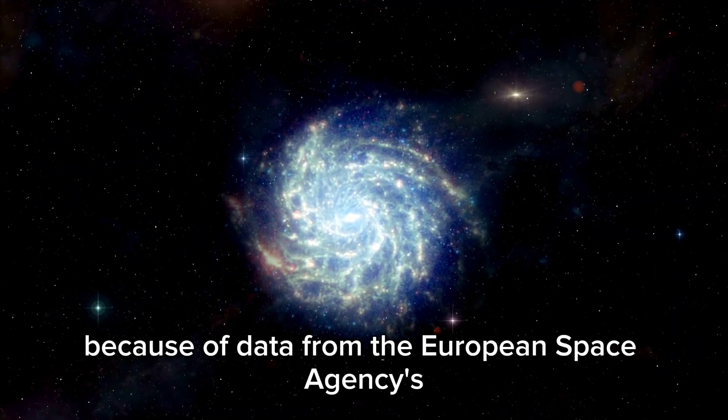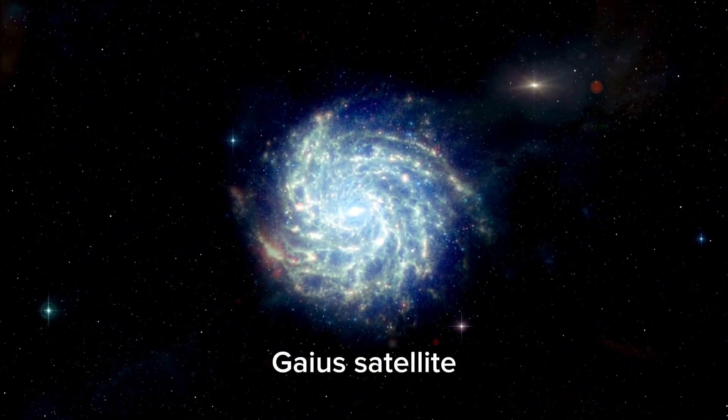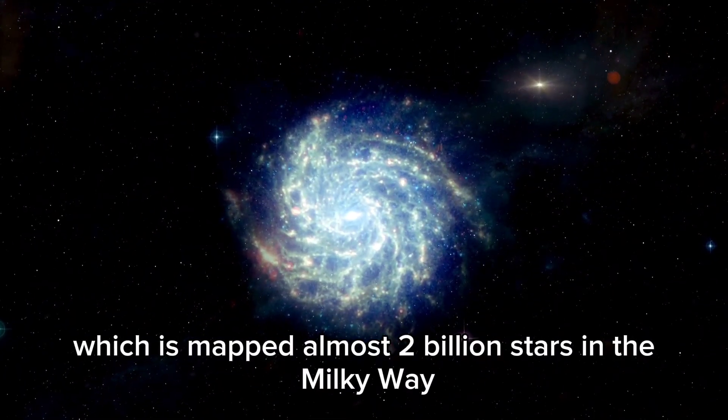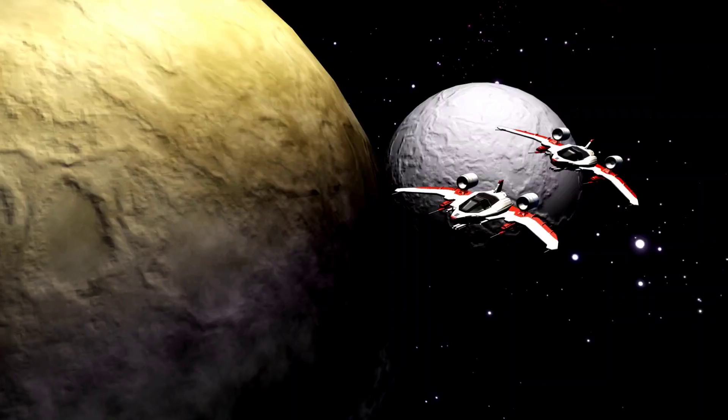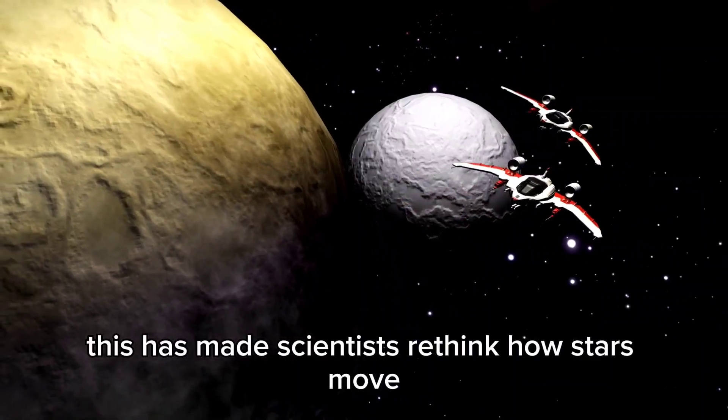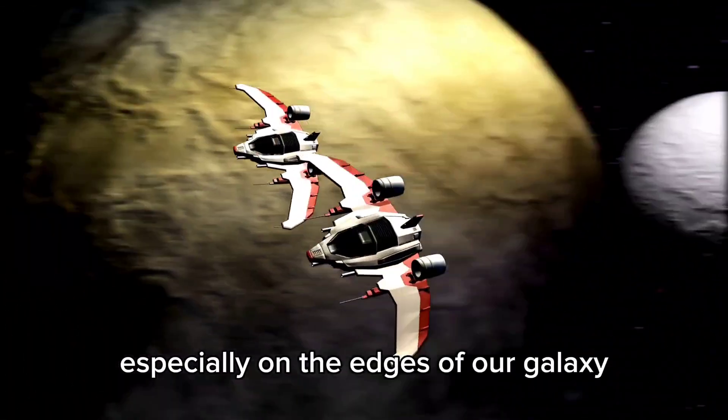We know this because of data from the European Space Agency's Gaia Satellite, which has mapped almost 2 billion stars in the Milky Way. This has made scientists rethink how stars move, especially on the edges of our galaxy.